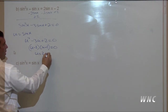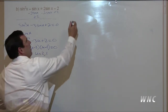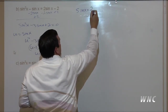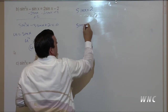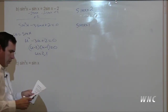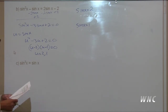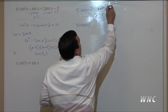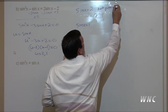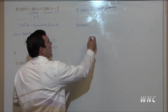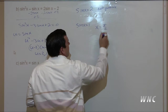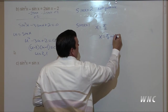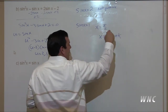So u equals two and u equals one. We're not finished though — substituting back, sine of x equals two and sine of x equals one. When is sine of x equal to two? It's not possible; the biggest sine can produce is one. So when is sine of x equal to one? When x is pi over two. So the solution is x equals pi over two plus two pi k.